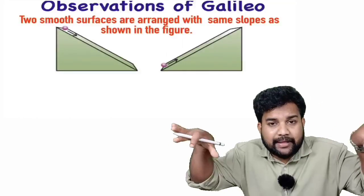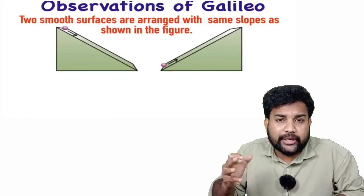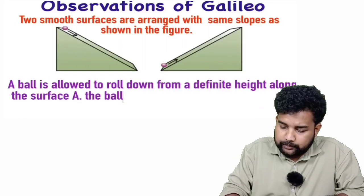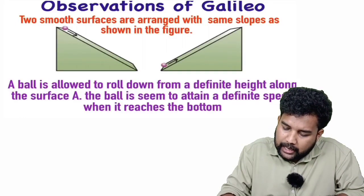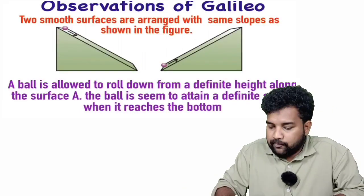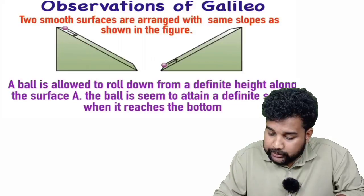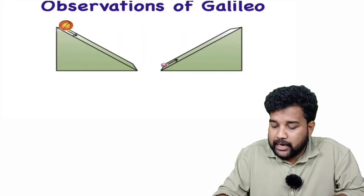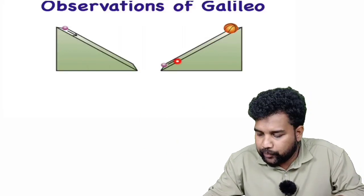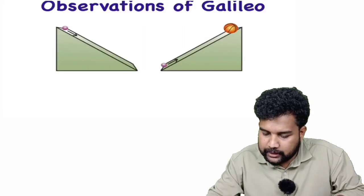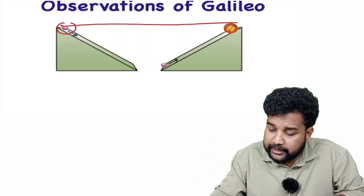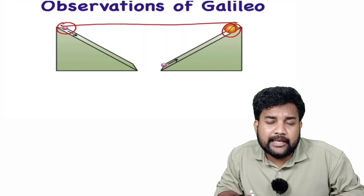Galileo takes two inclined planes and a ball. He allows the ball to fall and roll. The ball moves towards the next position. He observed that the initial height and the final height reached by the ball are equal.